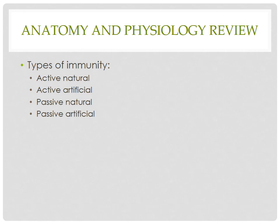Passive natural immunity is the introduction of antibodies — a good example is the transmission of antibodies from mother to baby through maternal-fetal transmission. Passive artificial immunity is the transmission of antibodies via immunization or injection of antibodies.